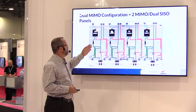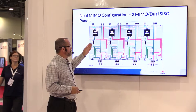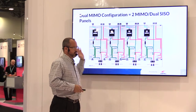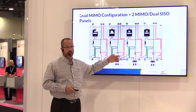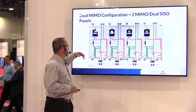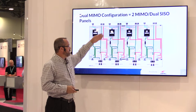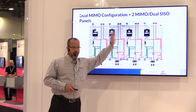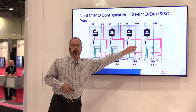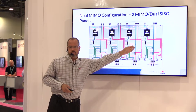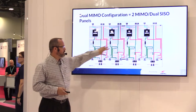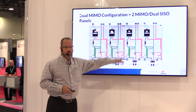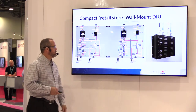This particular one happens to be a two-sector MIMO 700 tray, but it could be a 700, 850, 1900, AWS SISO tray, or it could be a 700 AWS MIMO tray, and so on.